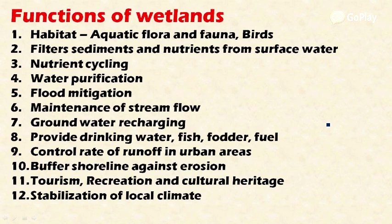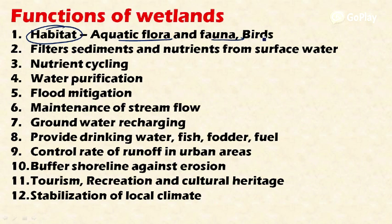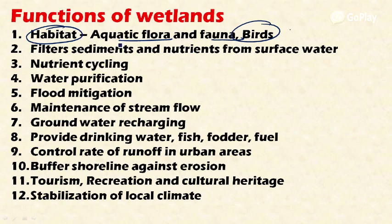Wetlands are very important from an ecological point of view because they serve diverse ecological functions; losing them creates instability and volatility in the ecosystem. They act as habitat for various aquatic flora, fauna, and birds — most migrating birds come to Indian wetlands for this distinct habitat. They also filter sediments and nutrients from surface water.